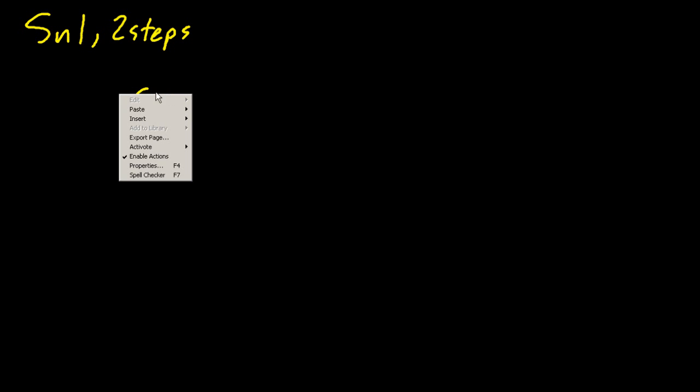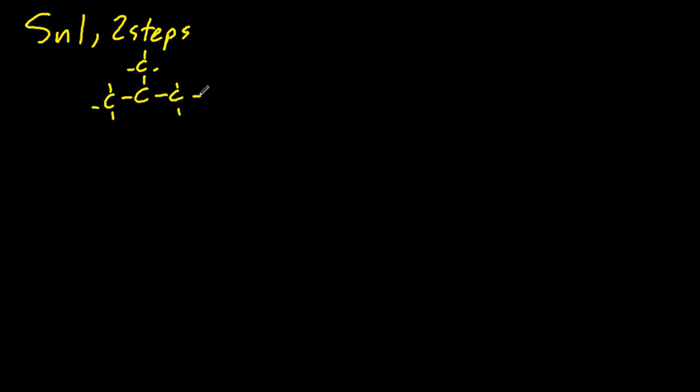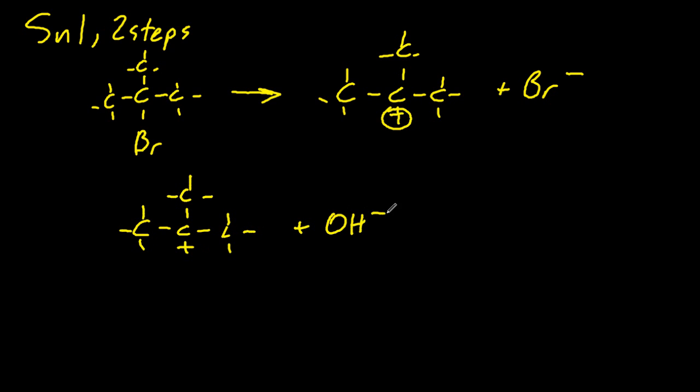Let's look at SN1 first. That's a two-step process. Let's choose the simplest tertiary haloalkane, 2-bromo-2-methylpropane. The first step is the bromine drops off and makes bromide. Bromine loves electrons, so it's going to take them with it from the bond.